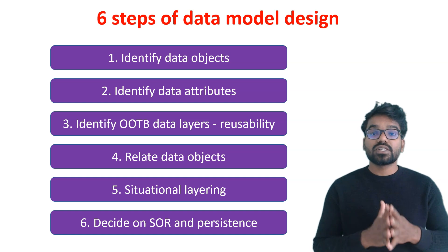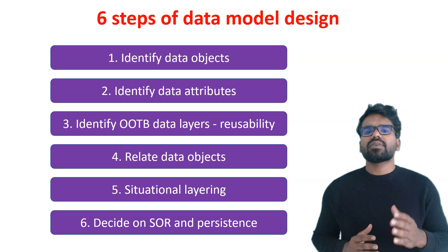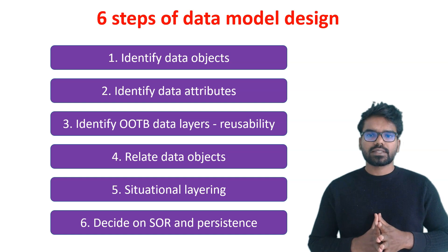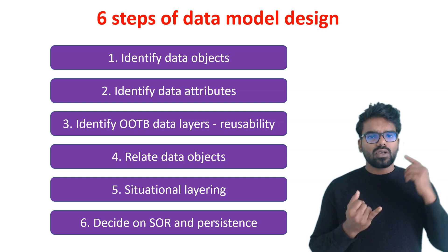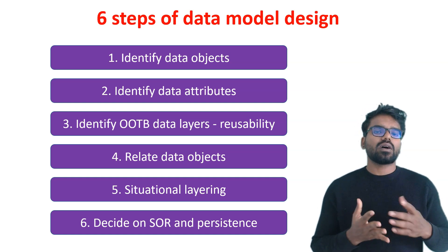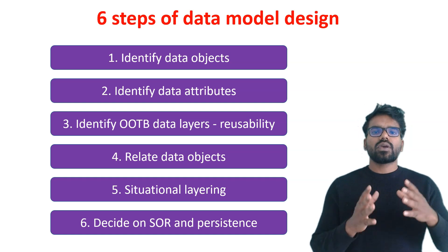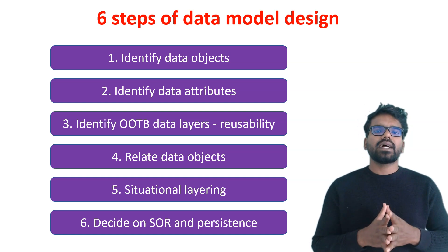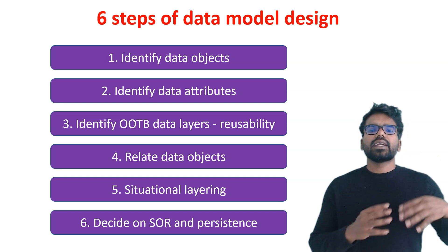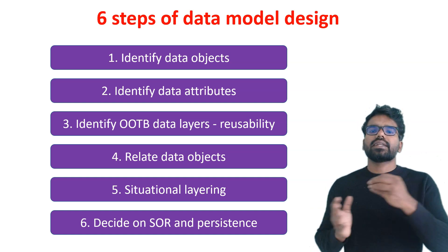The fifth point is on situation layering. You need to identify under which layer you are going to place your data objects — it can be on the organization layer, division layer, unit layer, or the application-specific layer. You have to identify that so you can create the data objects on the right layer, meaning your class will have the right inheritance.